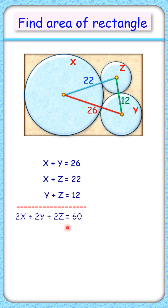Adding these equations and simplifying to get x plus y plus z is 30. Solving it will get the three radius of the circles as 18, 8, and 4 cm.